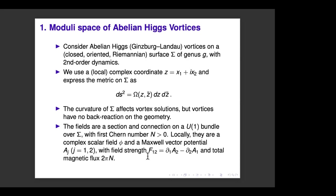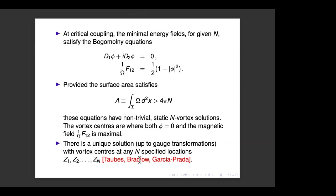There are local expressions for the components of the vector potential and its field strength F₁₂. In two dimensions, this is a Lagrangian field theory of the abelian Higgs model with kinetic and potential terms — not a Chern-Simons theory. The field strength is related to the magnetic field, and because the Chern number is positive, there's a magnetic flux of 2πN given by the integral of F₁₂ over the surface.